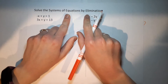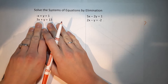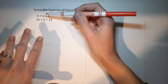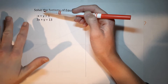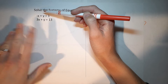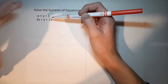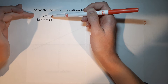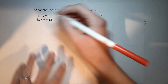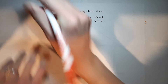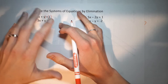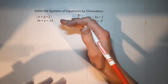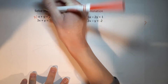Without further ado, let's talk about elimination. When we're doing elimination, we're basically combining these two equations, but what I want to have happen is when I combine them, I want one of the variables to completely cancel. For this one in particular, I am going to multiply my top equation by three. Remember, I can do anything to an equation as long as I do it to both sides — add, subtract, multiply, divide — as long as I do it to both sides.